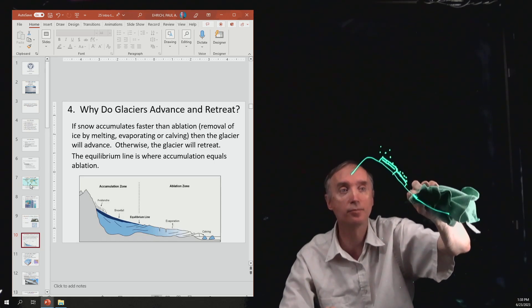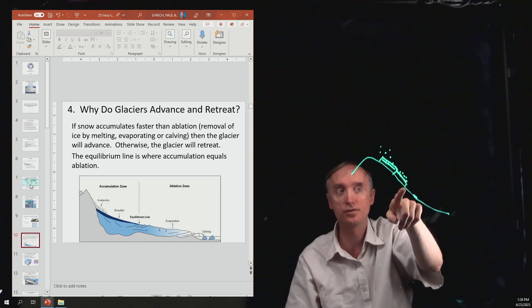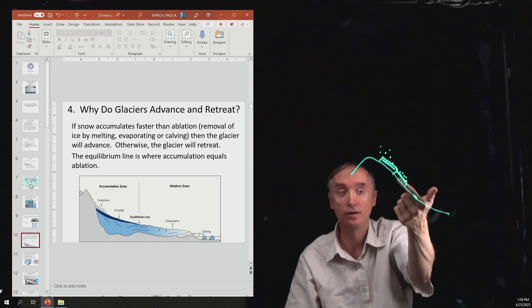If this part of the glacier down here disappears—it either melts or evaporates or calves—now here's the front of the glacier. And notice the front has retreated. It has moved further up.